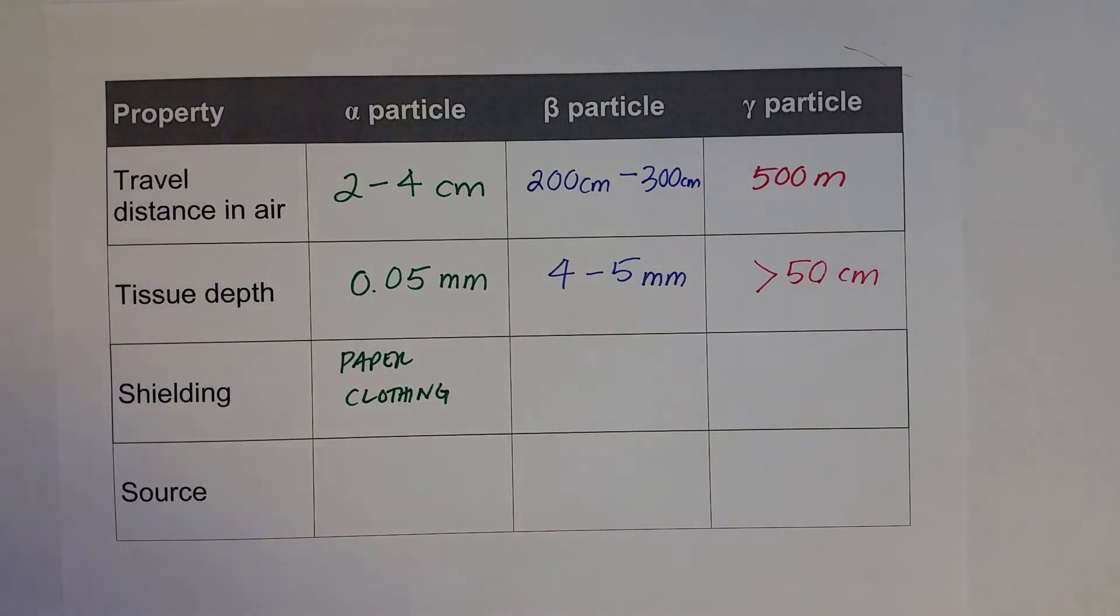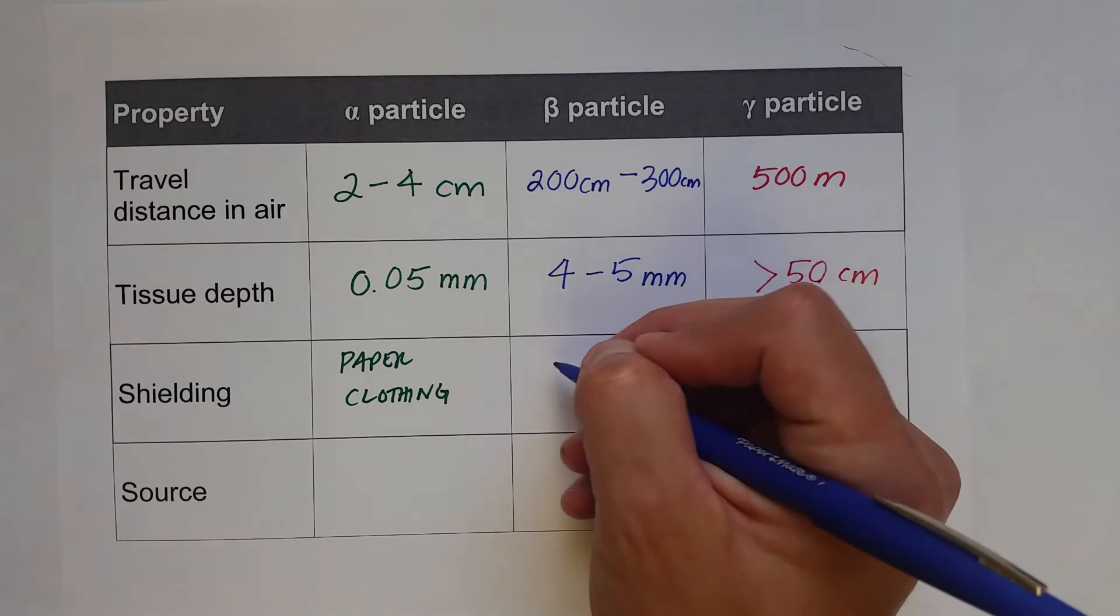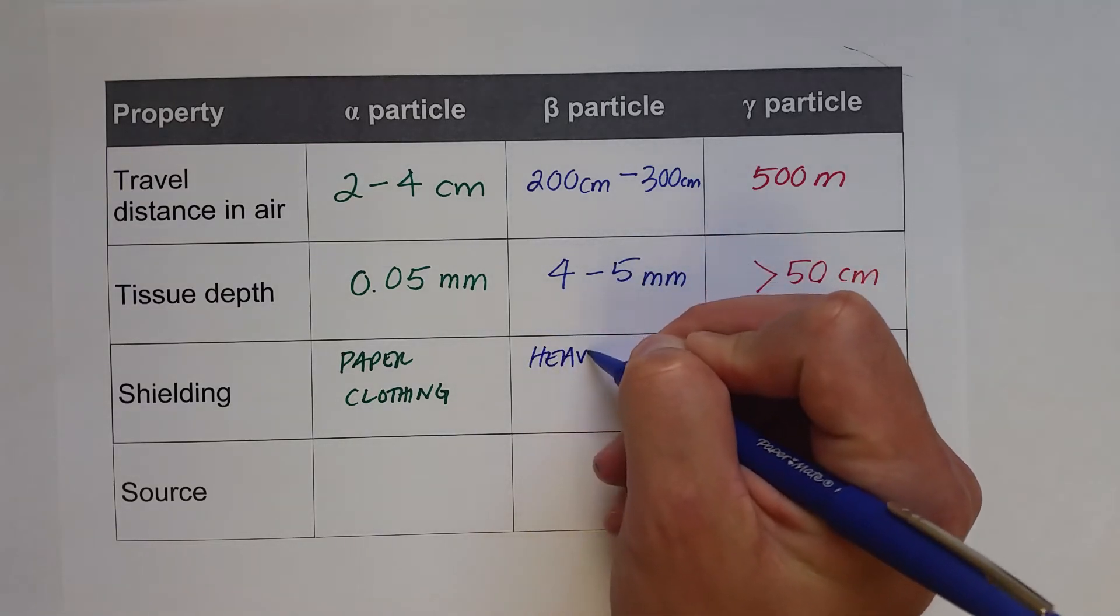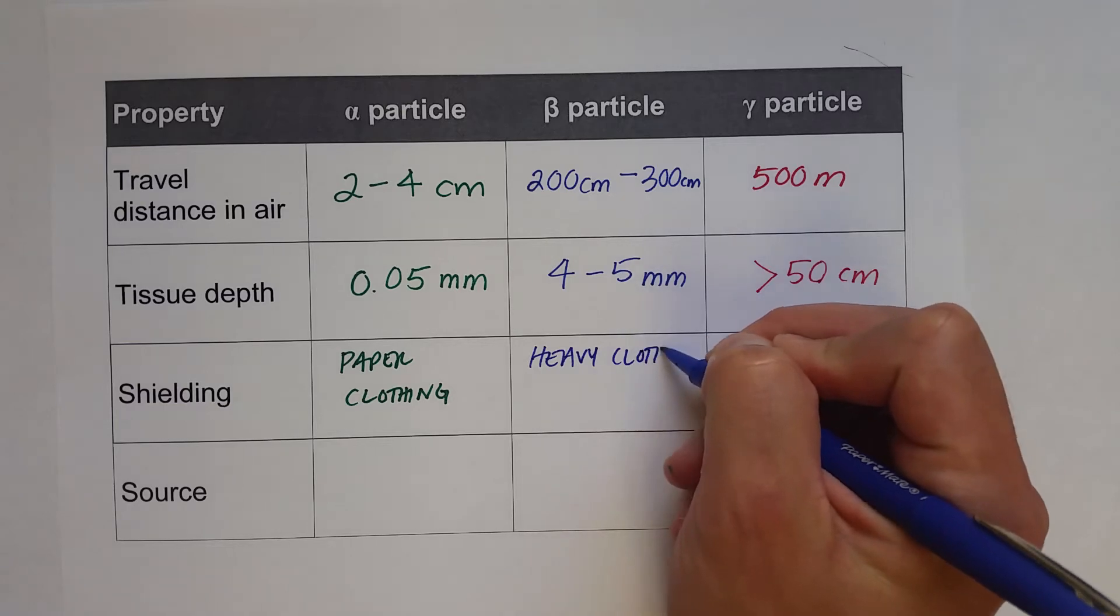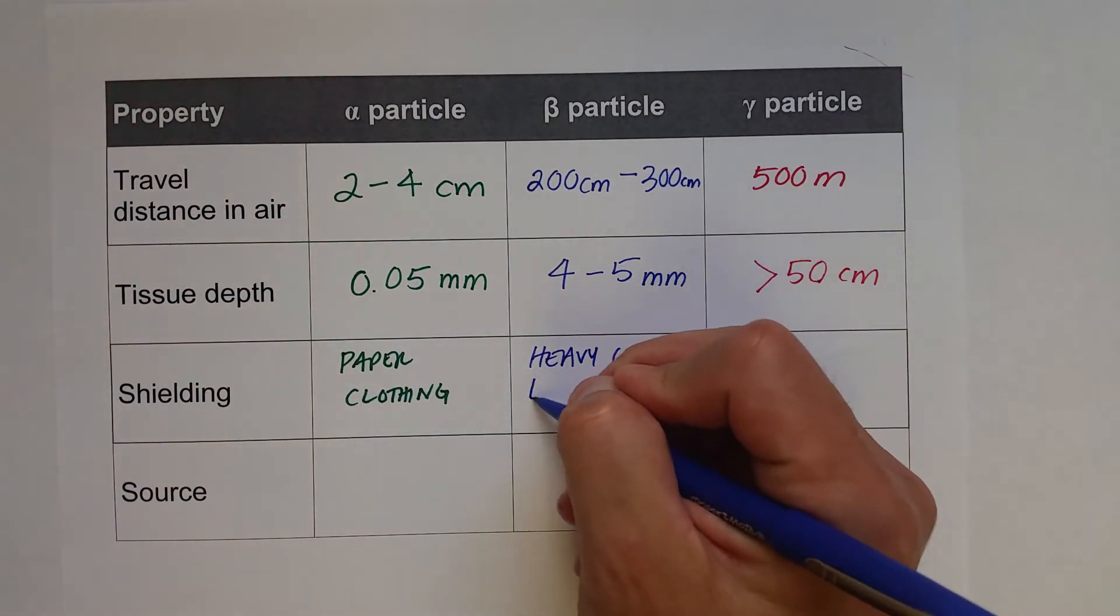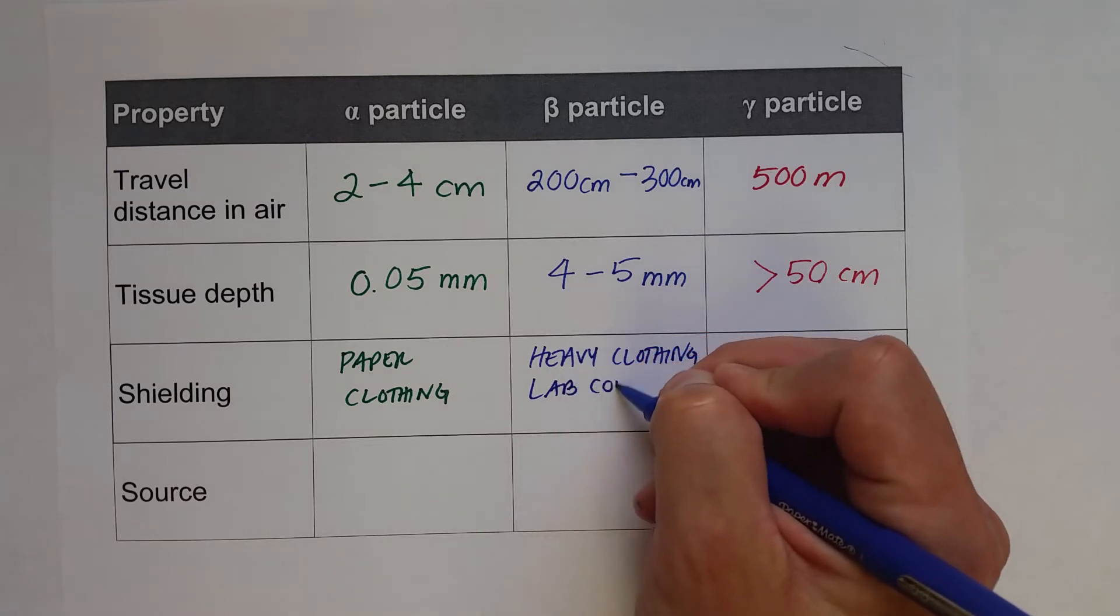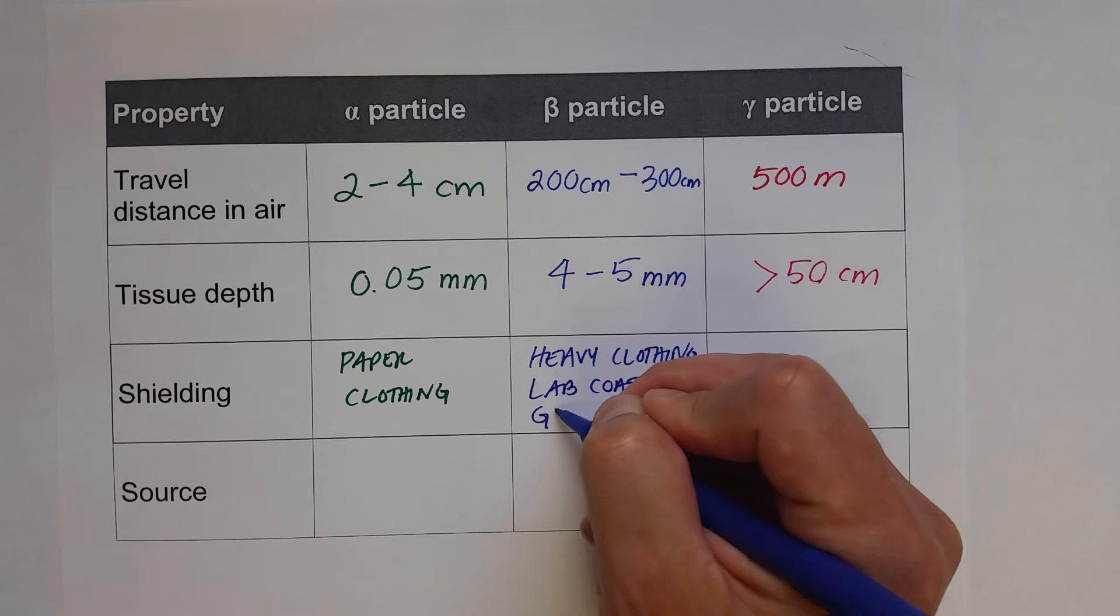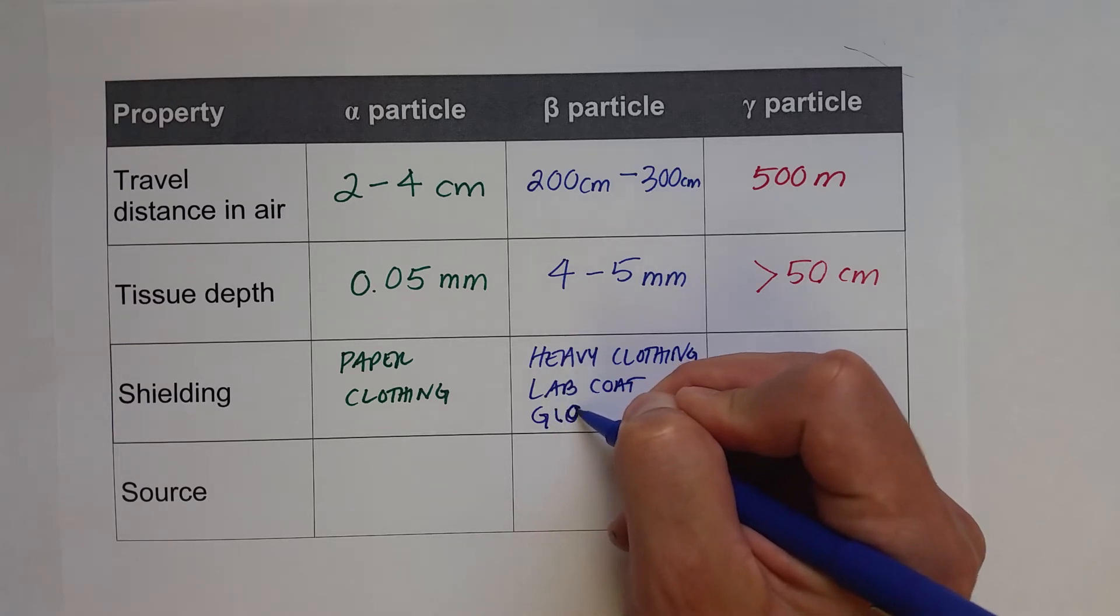Whereas the beta particle needs heavy clothing. Lab coat would be useful here, and of course we would need gloves handling this type of radioactive material.